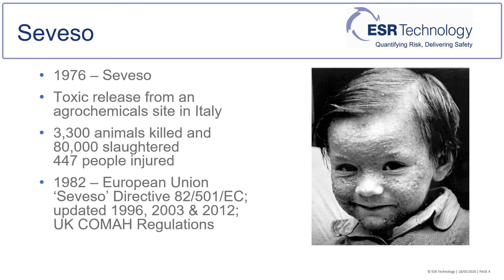The Seveso Directive aims to harmonise EU member states' legislation on major accident hazards, raising standards in many European regions. The latest directive is implemented in the UK as the Control of Major Accident Hazard regulations.